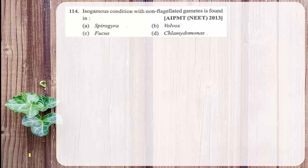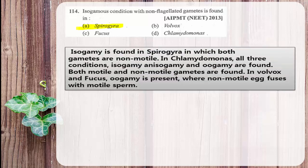Isogamous condition with non-flagellated gametes is found in Spirogyra. In Spirogyra, gametes are non-motile but of the same type — isogamous. Chlamydomonas shows all three conditions: isogamy, anisogamy, and oogamy. Volvox and Fucus show oogamous reproduction where the female gamete is non-motile and fuses with a motile sperm. The answer for isogamy with non-flagellated gametes is Spirogyra.